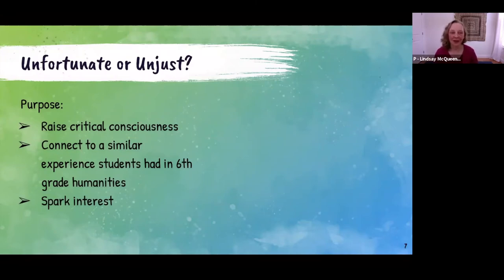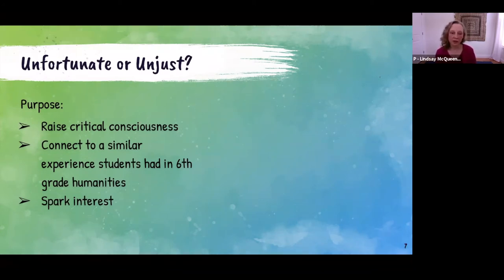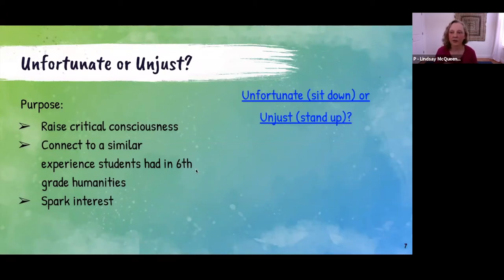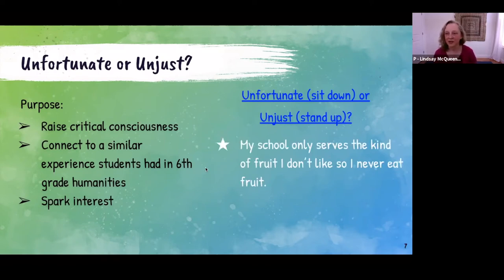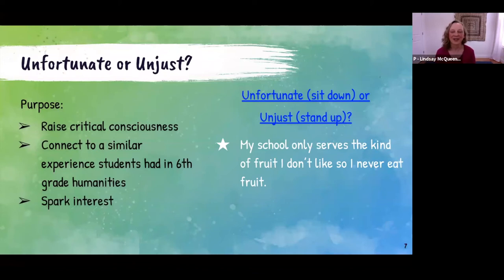The 'Unfortunate or Unjust' lesson is inspired by the sixth grade team. The purpose is to raise critical consciousness and awareness. It's a series of ten statements, and students stand up or sit down based on whether they think the statement is unfortunate or unjust. This is also meant to spark interest in what they then want to go investigate. This is a COVID adaptation — normally we'd move around the room, but this was a stand up or sit down version.